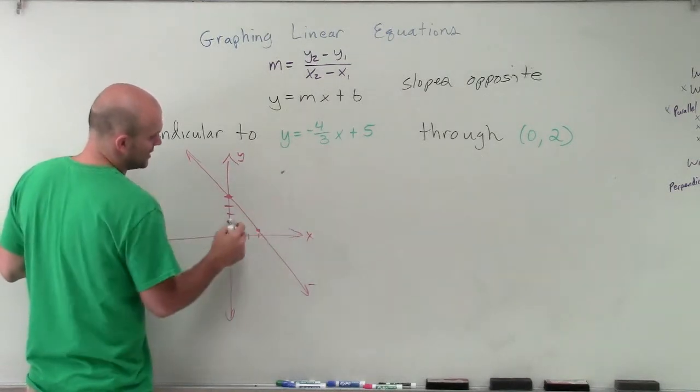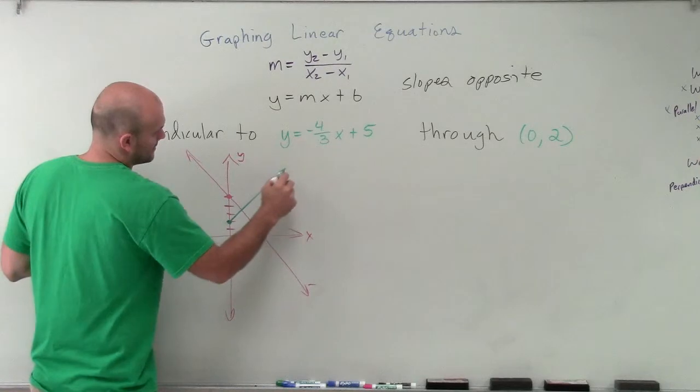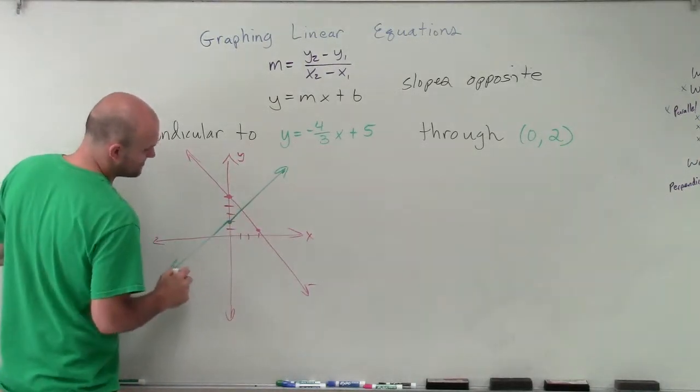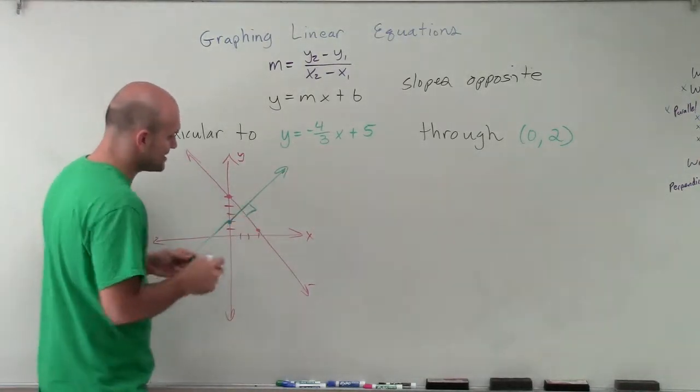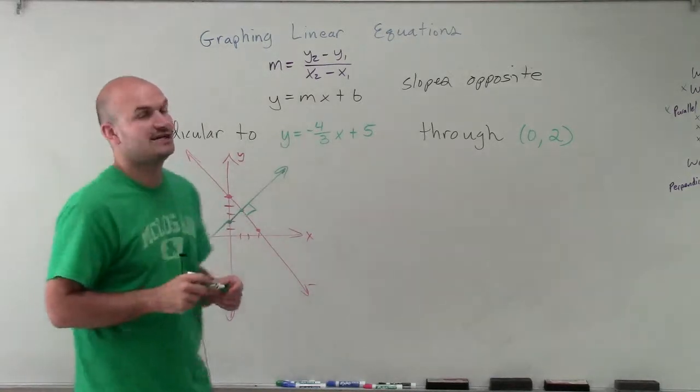So therefore, I go up 2. Now, I know this equation has to have a positive slope, and it also has to intersect the line at a 90 degree angle.